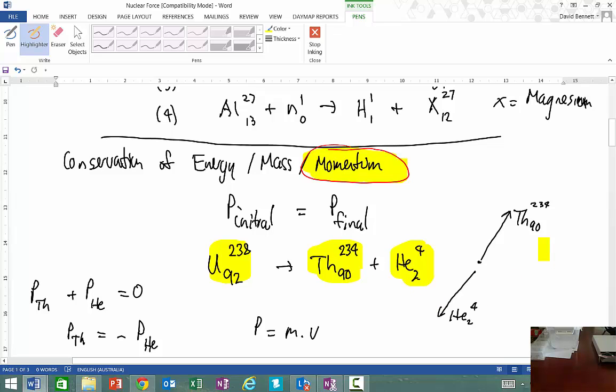What we do know is that our initial momentum must be equal to our final momentum as well. So in other words, if this is just sitting there, it's an atom sitting there, which is a uranium atom 238, then what's going to happen is it's got no momentum initially. So therefore, the momentum of the thorium atom as it moves away and the helium must be balanced.